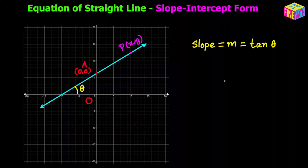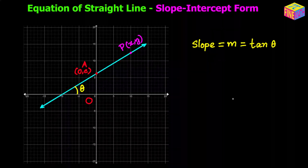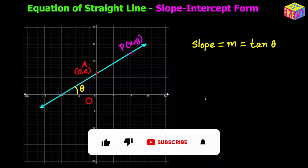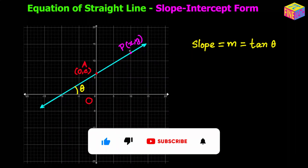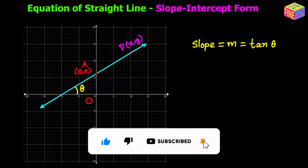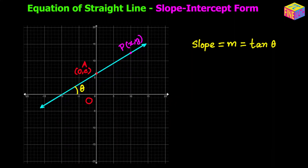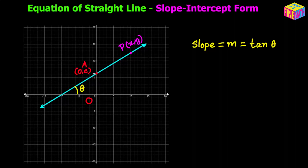If a moving point is moving in a particular direction all along, that means there is no change in direction. So anywhere on this straight line, if I take two points, the slope will be the same. Let's suppose we take the moving point P which has coordinates (x, y), and we also have the point on the y-axis where this straight line cuts the axis — that point is A.